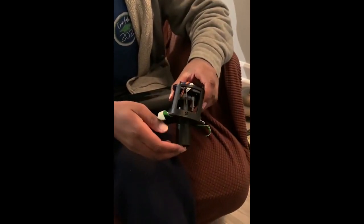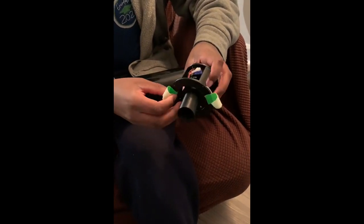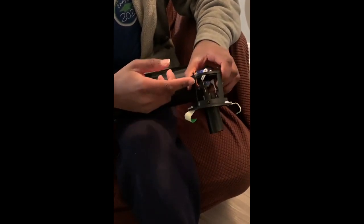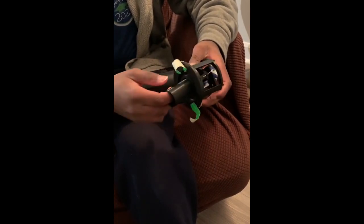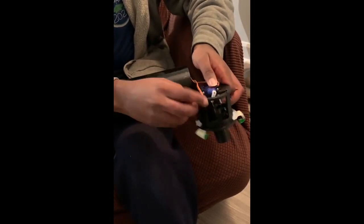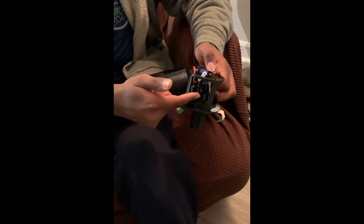This is our TVC system or thrust vectoring control system, which is composed of several components, including our dual axis gimbal. Our dual axis gimbal includes an X and Y direction for which the rocket motor can move in. For the Y axis gimbal, we have this outer servo motor, which basically controls the inner servo motor, which is our X gimbal.